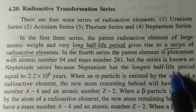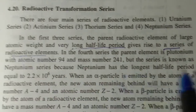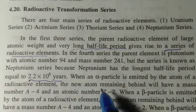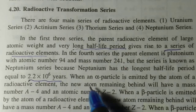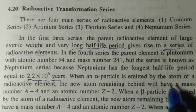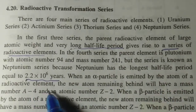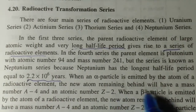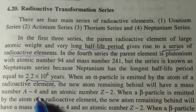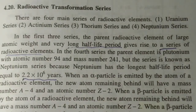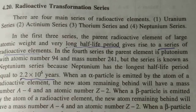Neptunium has the longest half-life period equal to 2.2 into 10 power 6 years. When an alpha particle is emitted by the atom of a radioactive element, the new atom remaining behind will have a mass number of A minus 4 and atomic number of Z minus 2.